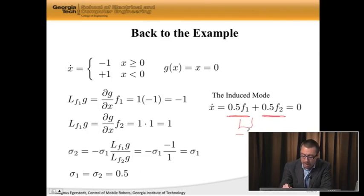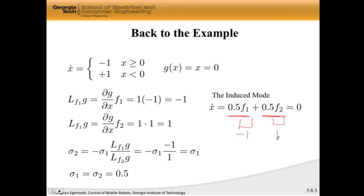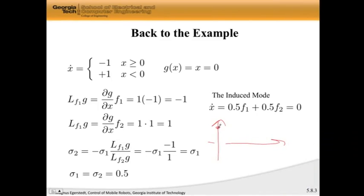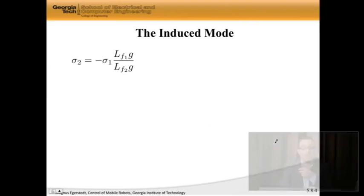Well, f1 is negative 1, f2 is plus 1, so I get negative 0.5 plus 0.5, and that's equal to 0. So I know that my induced mode in this case is x dot is equal to 0, which is exactly what we wanted, because remember this picture that we've drawn over and over again. We want to start here, get down here, and then keep staying at 0. And the math turned out to work out in this case.